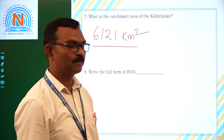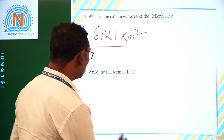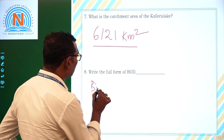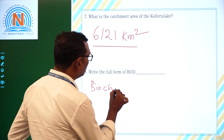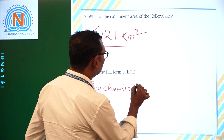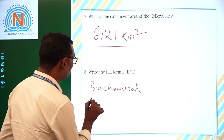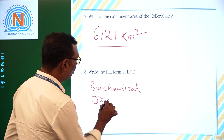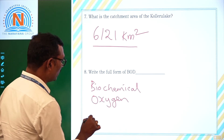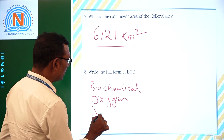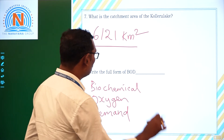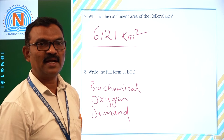What is the full form of BOD? BOD stands for Biochemical Oxygen Demand — B for Biochemical, O for Oxygen, D for Demand.